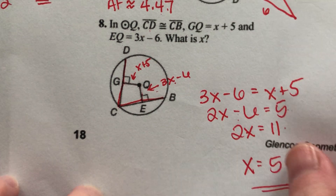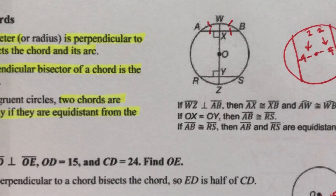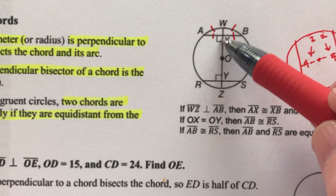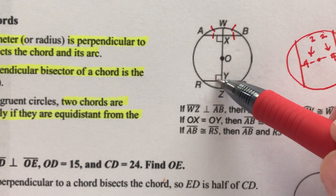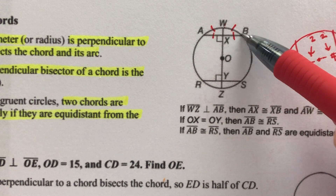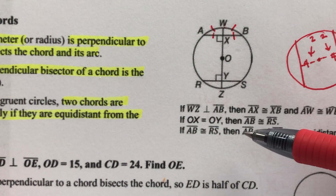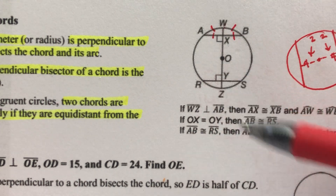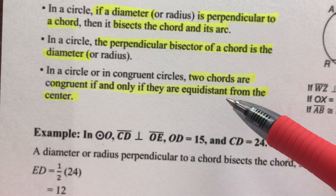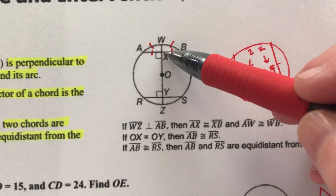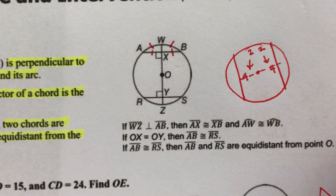That was a quick video covering three rules: first, if a line is perpendicular to a chord, it's the diameter or passes through the center, and it cuts the chord and arc exactly in half — it bisects them. Vice versa, if a line bisects the chord and arc, it must be the diameter. Second, two chords are congruent if and only if they are equal distance from the center. Let me know if you have any questions.